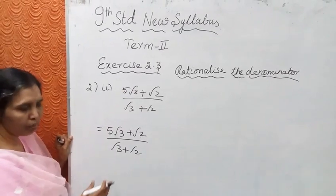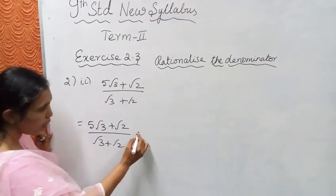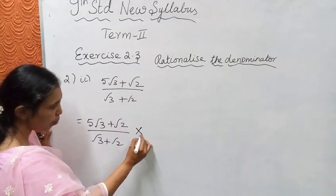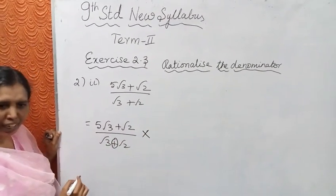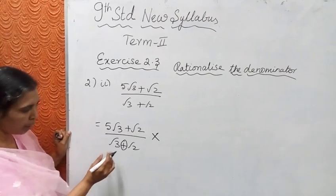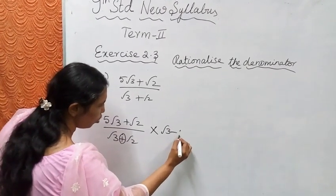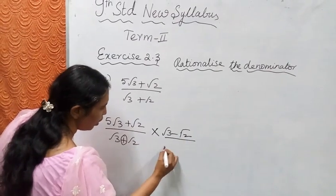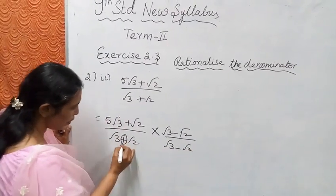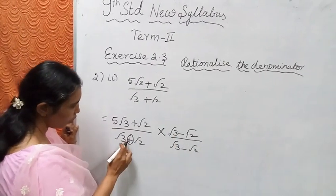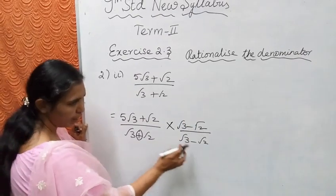Rationalize the denominator. To rationalize the denominator, multiply and divide by the conjugate. The conjugate here is √3 minus √2 divided by √3 minus √2. Change the plus to minus, or minus to plus, when forming the conjugate, then multiply and divide.